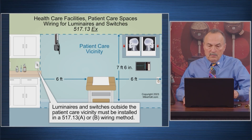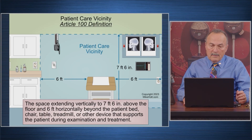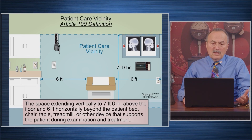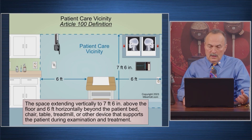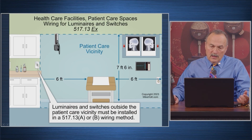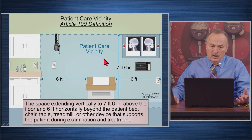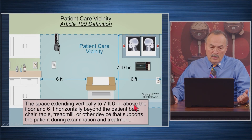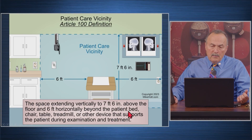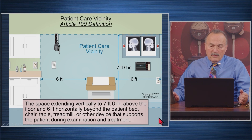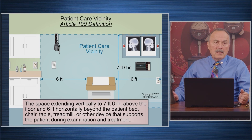Outside the patient vicinity, a switch or lights above don't have to be connected with both A and B — just A or B — giving you permission for a different wiring method. The patient care vicinity is the space extending vertically seven feet six inches above the floor and six feet horizontally beyond the patient bed, chair, table, treadmill, or other device that supports the patient during examination and treatment.